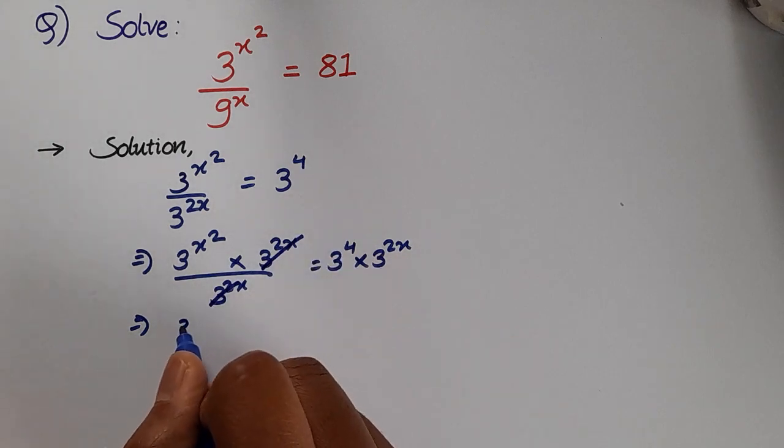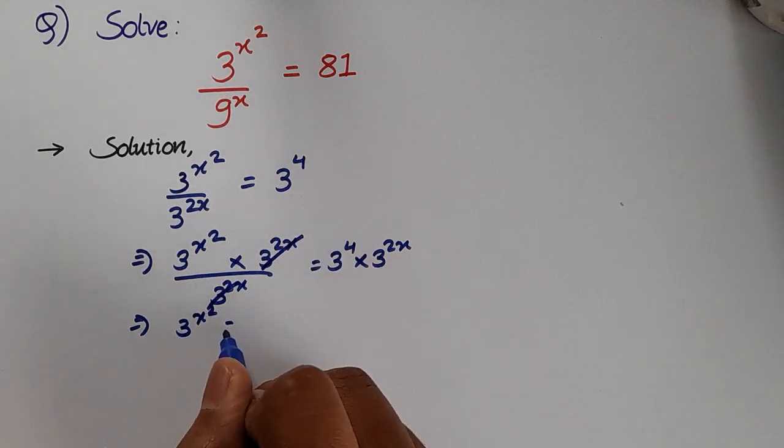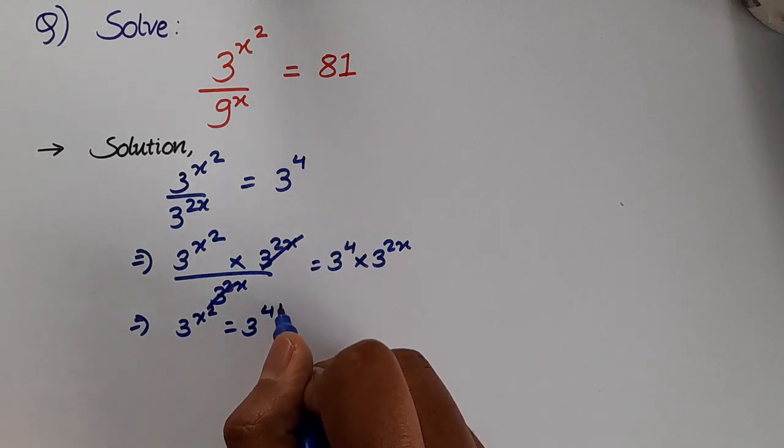This will cancel out and we get 3^(x²) = 3^(4+2x).